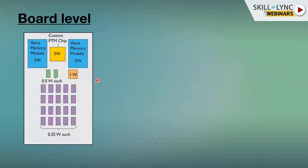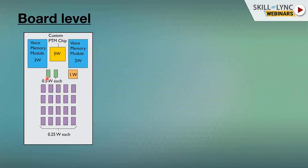At board level, take the example of a PCB board where we have a volume memory module emitting 3 watts, a PTM chip emitting 3 watts, another voice memory module at 2 watts, and 0.2-watt components placed in row-column format, with 0.5-watt and 1-watt components as well. We have higher wattage components on one side and rows and columns of components on the other side.